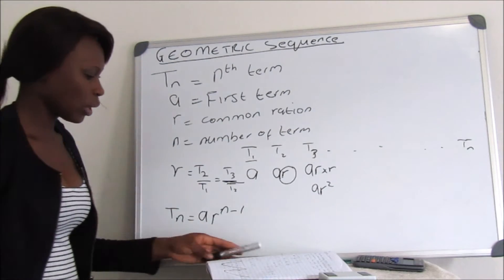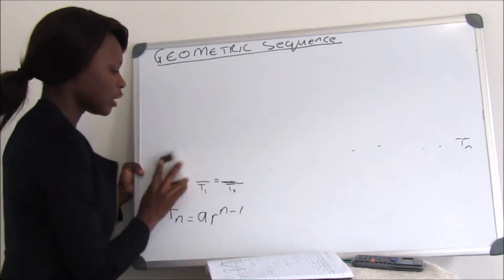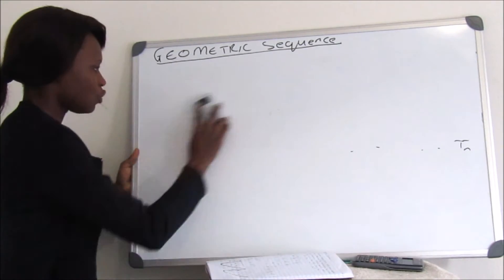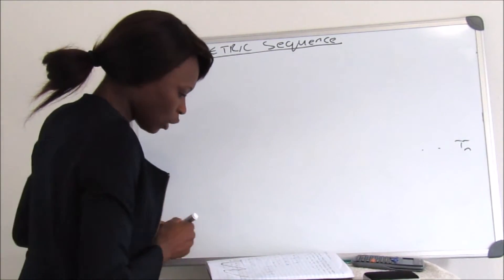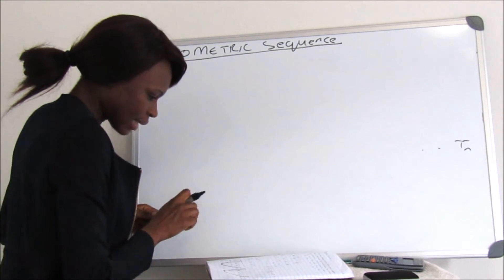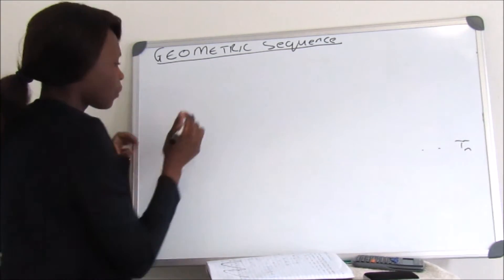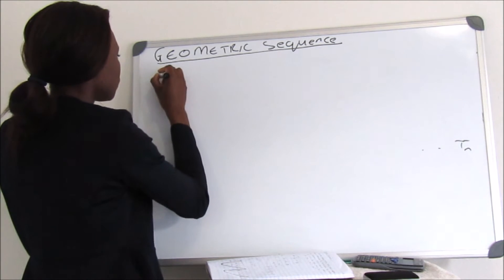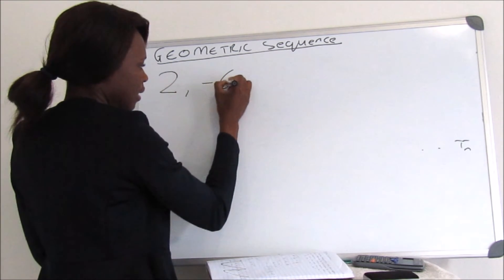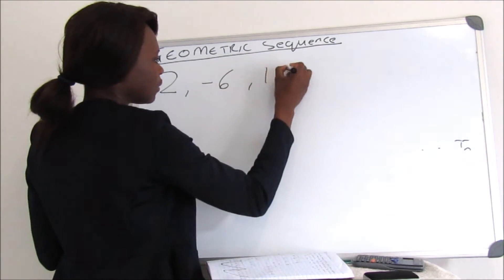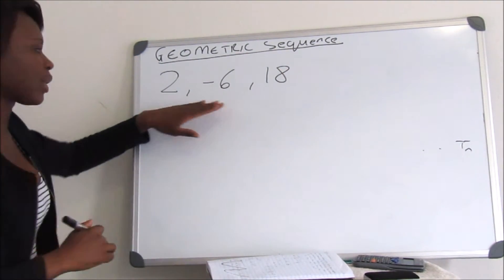Let's do one example to see how to apply these rules to a question. We are given the sequence 2, negative 6, and 18. We have three terms in this sequence.